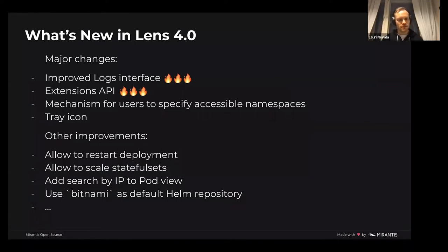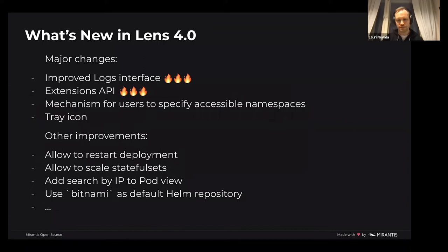It's now allowed to restart deployments or scale StatefulSets. Previously you could only scale deployments directly from the Lens dashboard, but now it works for StatefulSets too. You can search pods by IP on the list view. We changed the default Helm repository to use Bitnami instead of the deprecated stable repository. And there are tons of other small changes and bug fixes — you can see all those from the release notes.